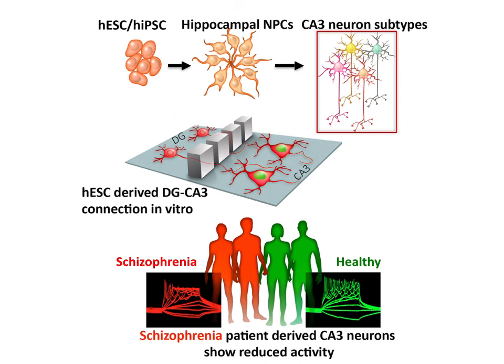Because neuronal connectivity in the hippocampus has been implicated in schizophrenia, we applied CA3 and DG differentiation paradigms to schizophrenia patient-derived stem cells. Our approach offers critical insights into the network activity aspects of schizophrenia and may be a promising tool for modeling diseases with hippocampal vulnerability.